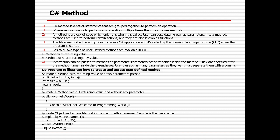Information can be passed to a method as parameters. Parameters act as variables inside the method. They are specified after the method name inside the parentheses. Users can add as many parameters as they want, just separated by comma. For a method returning a value: access modifier, return type, method name, and parameters. For a method not returning anything, the return type will be void, then the method name, and you can print output to the console.